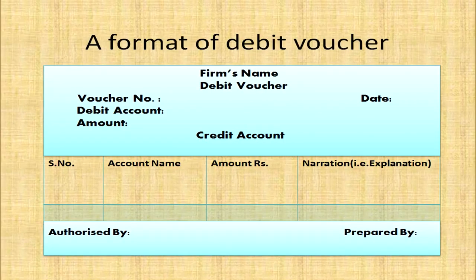Here is the format of a debit voucher. You have to write the firm name, then 'Debit Voucher', followed by voucher number, date, debit account, amount, and credit account. In separate columns you write serial number, account name, amount, and narration. It is signed or prepared by the accountant and countersigned by the authorized signatory.